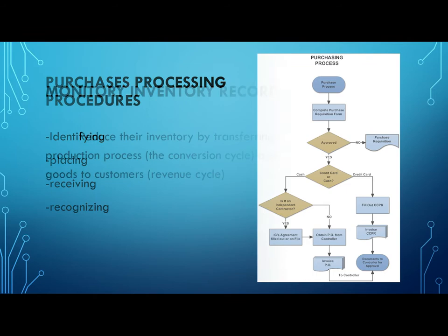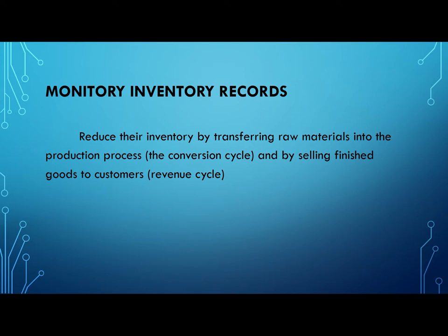Monitor inventory records. Inventory management involves ordering, stocking, and using a business's materials or products. These are various types of inventory like raw materials, cycle inventory, and MRO goods. Prioritizing your inventory helps you understand what you need to order or manufacture more frequently so you can continuously fulfill your customer's needs.